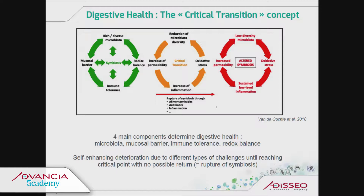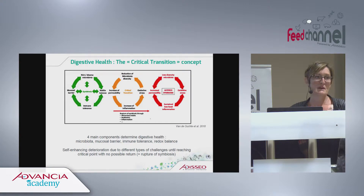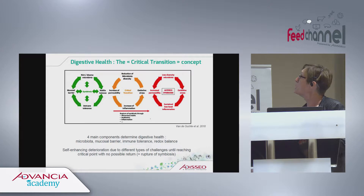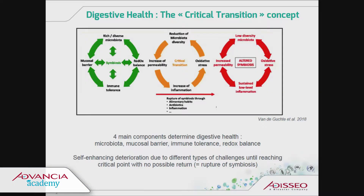Luckily, and this is the same for humans, you can return from this stage back to symbiosis. This is true only to a certain point, however, where there is no possible return — and in that case you reach the stage of altered symbiosis, characterized by very low diversity in the microbiota, a high increase in intestinal permeability, and a disturbed inflammatory response.